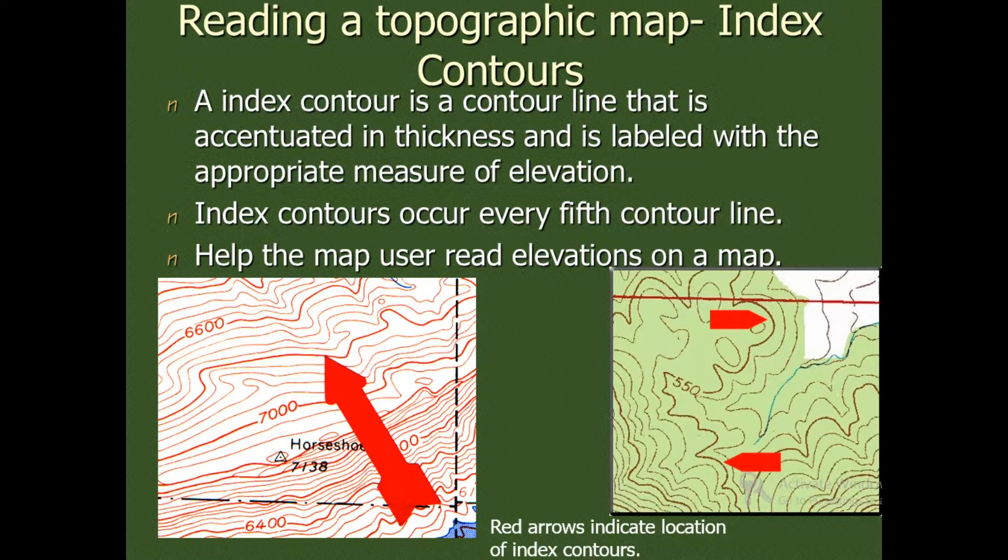An index contour is a contour line that is accentuated in thickness and is labeled with the appropriate measure of elevation. So you will find that in a topographic map, contour lines will have index contours which will indicate the height with numbering. It helps map users read elevation on the map more easily.